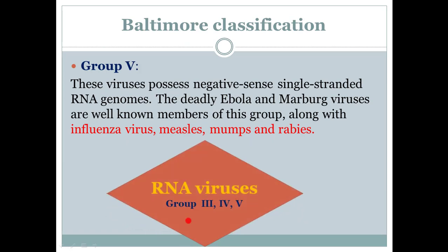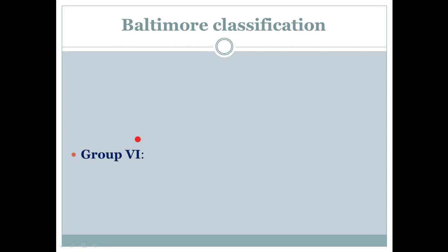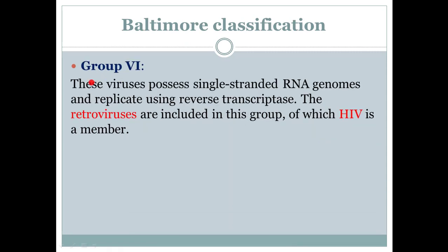Now, Group 3, Group 4, and Group 5 viruses are all RNA viruses. We saw that Group 1 and Group 2 were DNA viruses. Group 3, Group 4, and Group 5 all fall under RNA viruses.